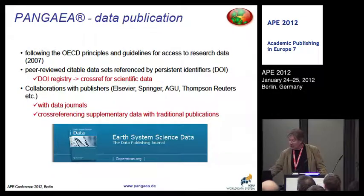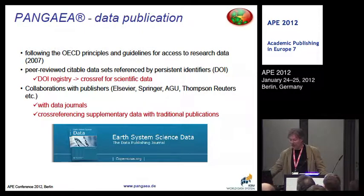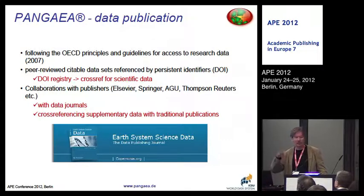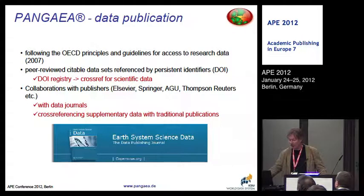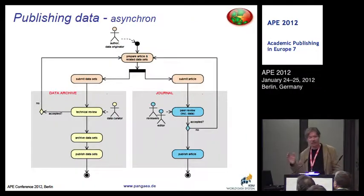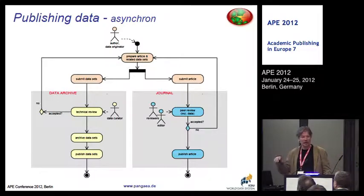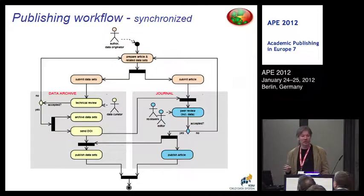For the data publication part, we are following the OECD principles and guidelines for access to research data. We have peer-reviewed, citable datasets and DOI registry. We have these collaborations with publishers — by now we have Springer, AGU, Wiley, and others — and with data journals such as the Earth System Science Data journal of Copernicus. We are cross-referencing supplementary data with traditional publications. This is the traditional model of how to publish data in articles — as you can see, this is asynchronous, with data published separately to the articles.